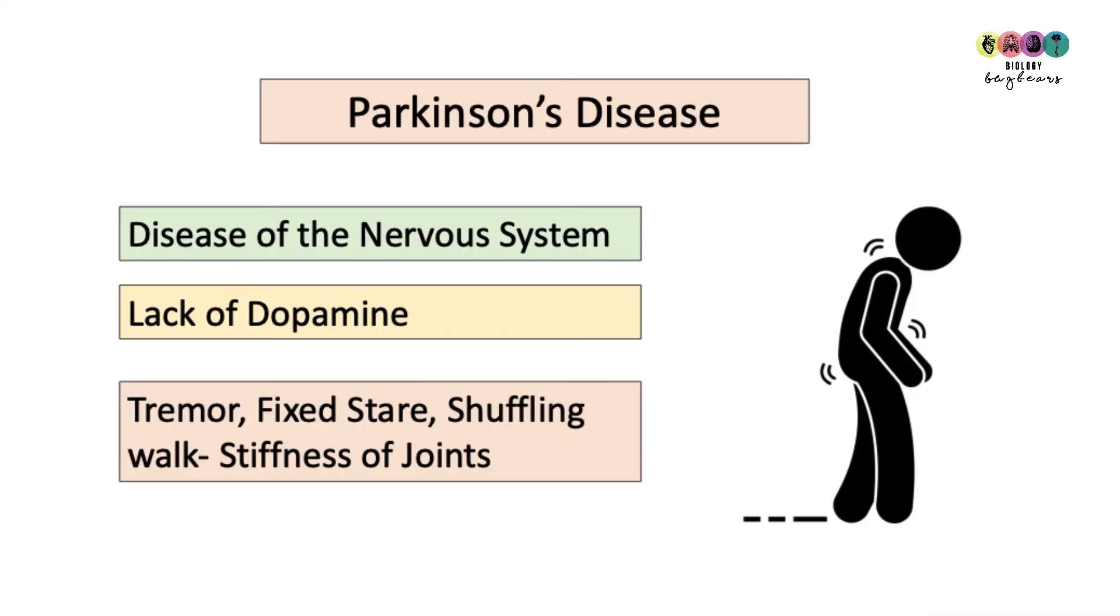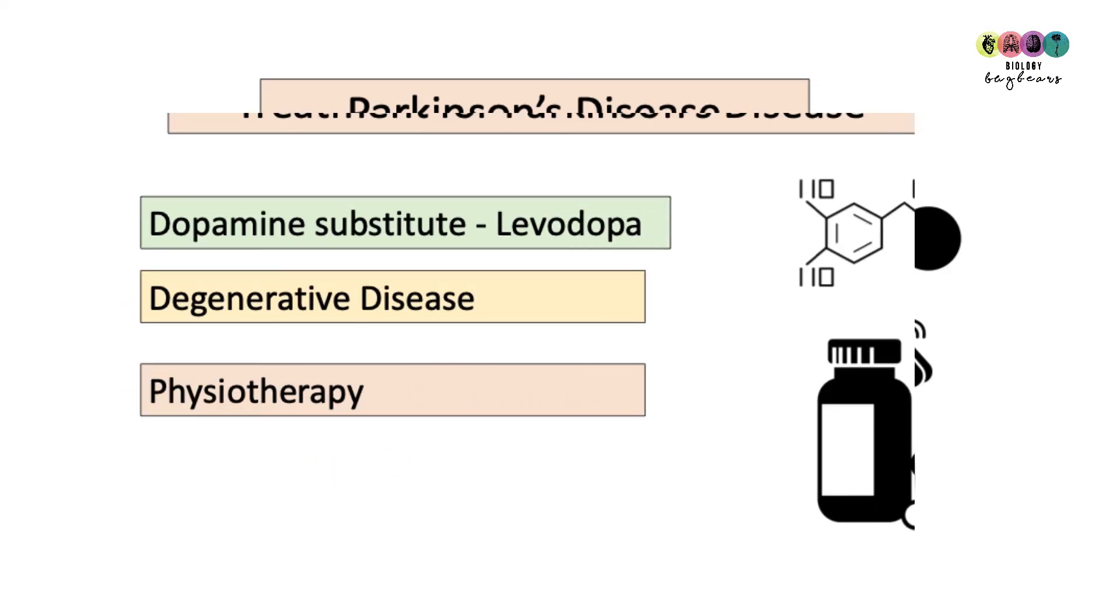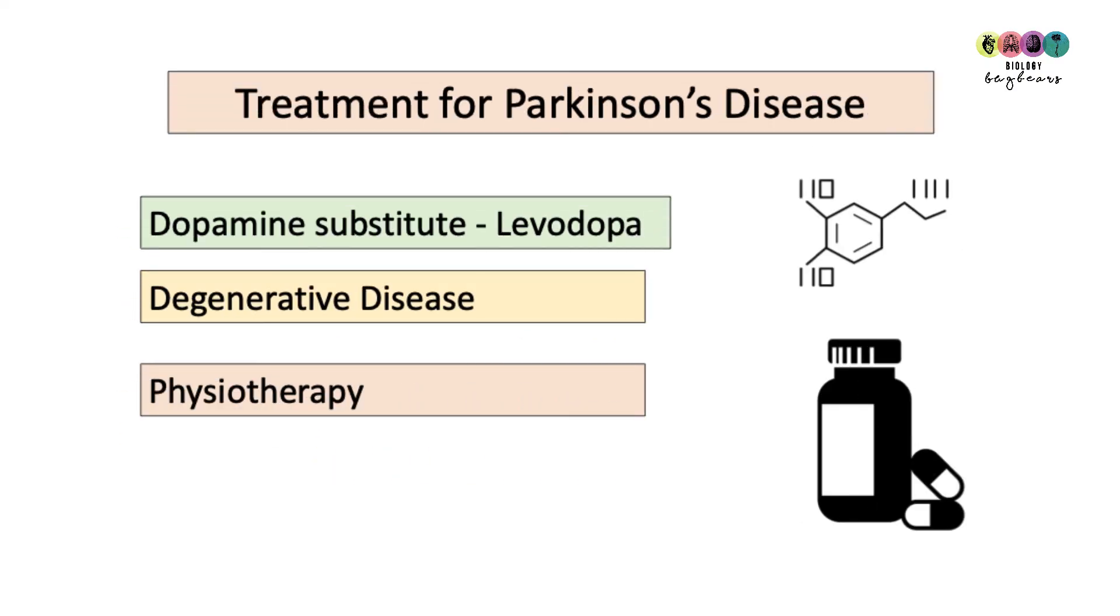Lastly, we have to look at Parkinson's disease. It's a disease of the nervous system. We have to know its name and what causes it. It's a lack of dopamine. The symptoms are tremor, usually in the hands, fixed stare, shuffling walk, and stiffness of joints. Parkinson's is treated by usually administering medicine, drugs for example, and they mimic dopamine. Levodopa is a common one, so know its name. Unfortunately, Parkinson's is degenerative, which means that it will get worse. The stiffness and mobility issues are treated very well with physiotherapy.